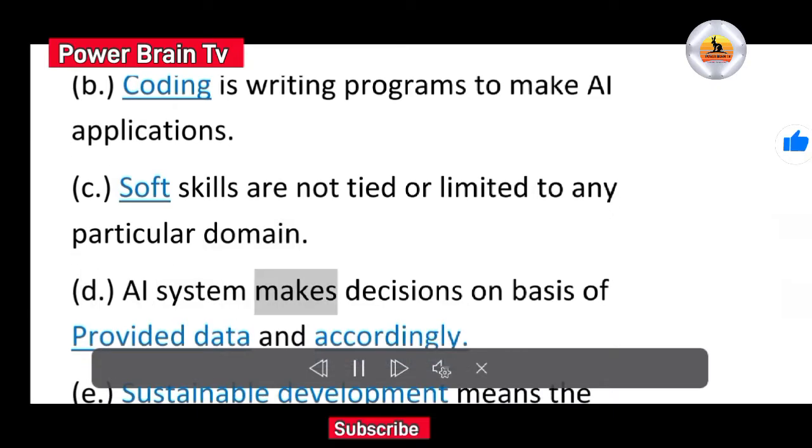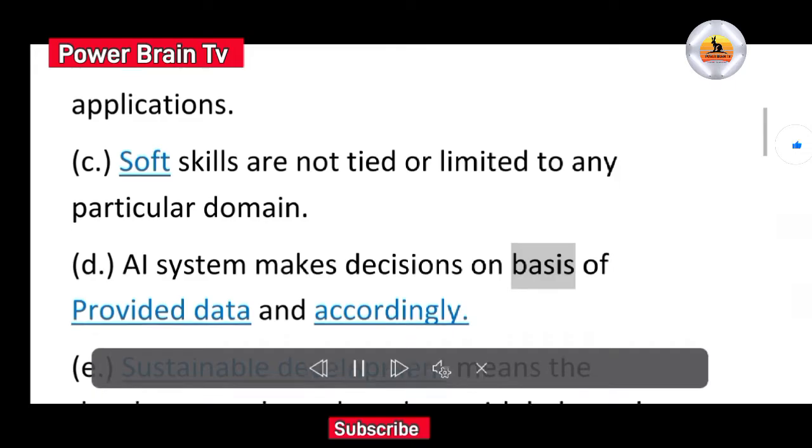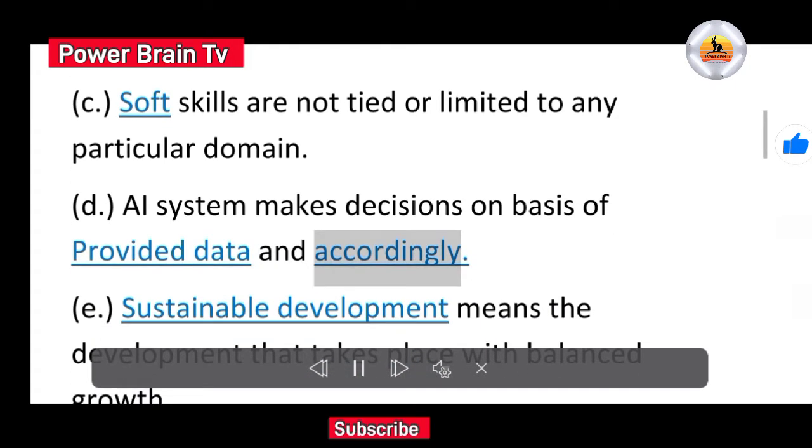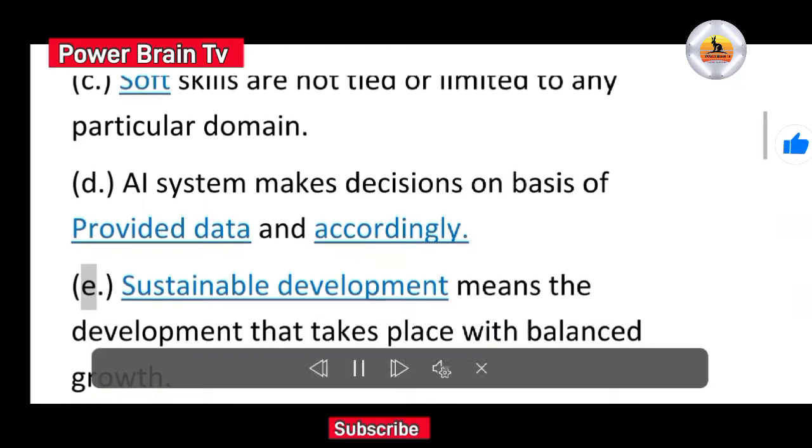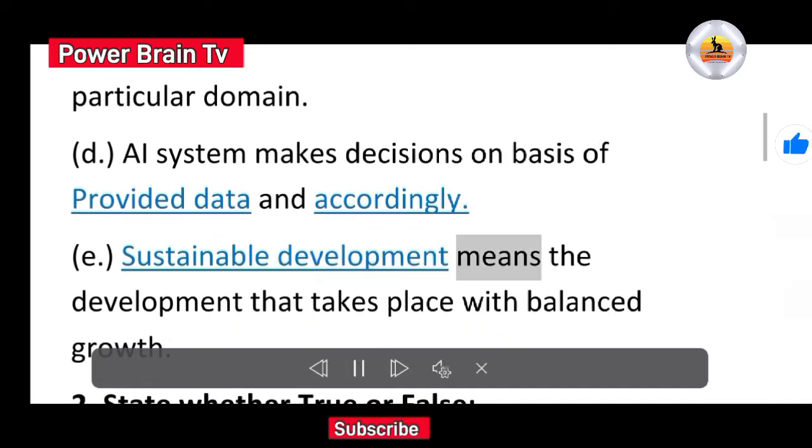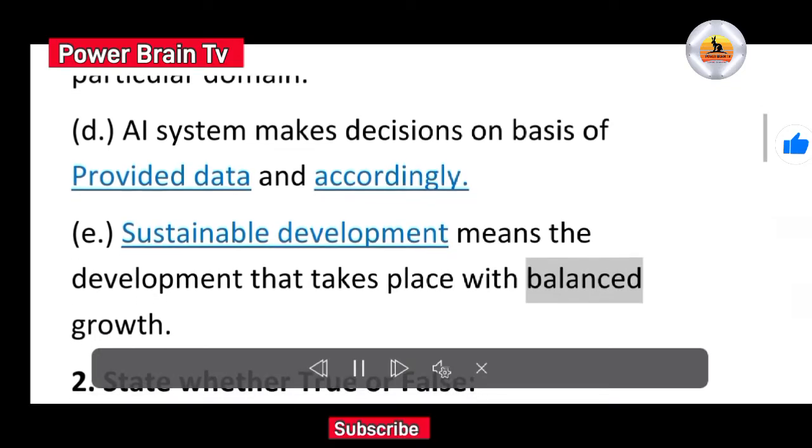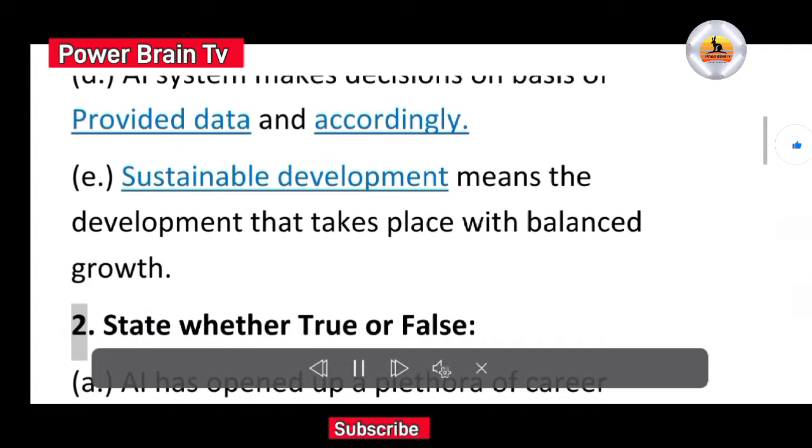D. AI system makes decisions on basis of provided data and accordingly. E. Sustainable development means the development that takes place with balanced growth.